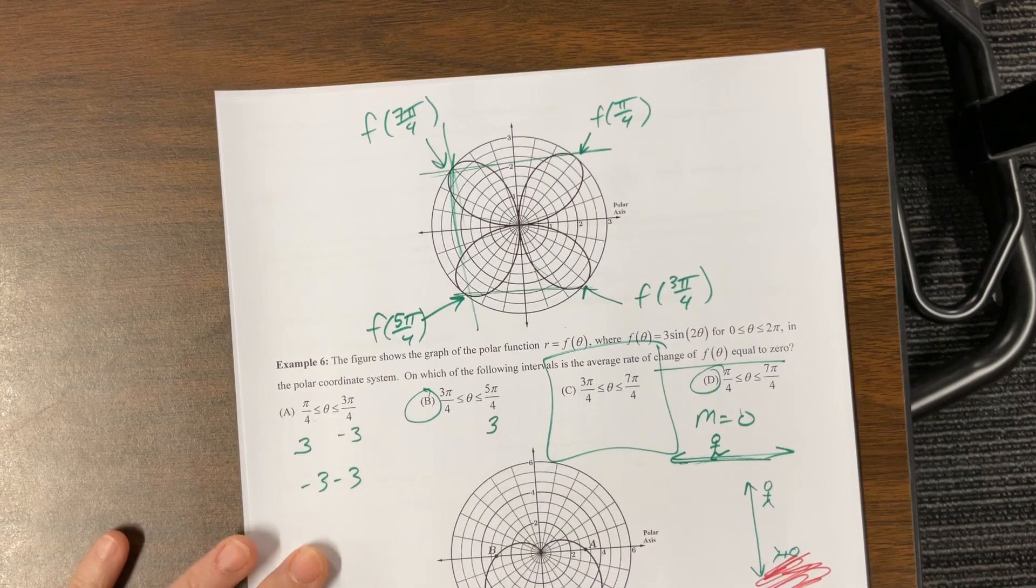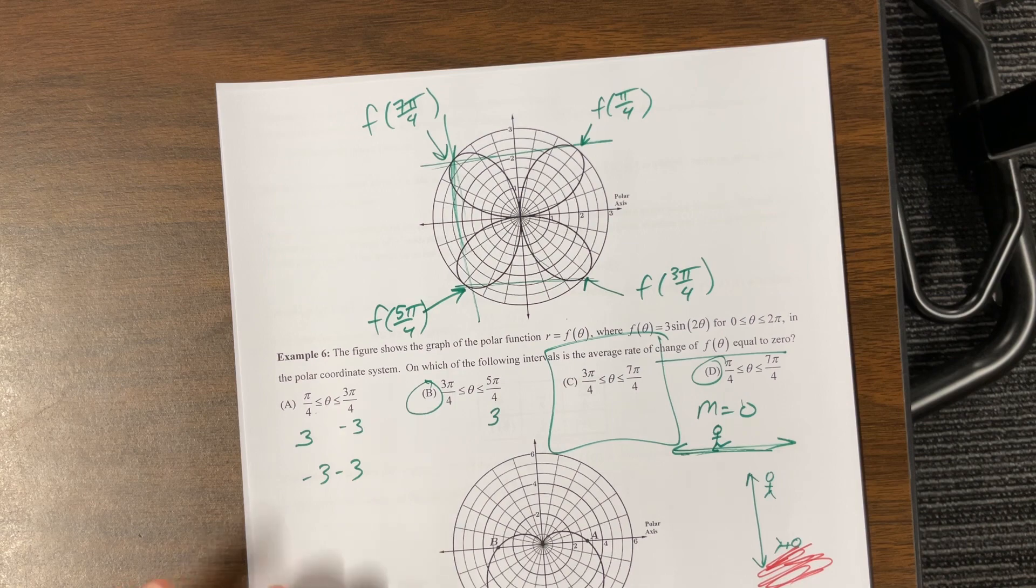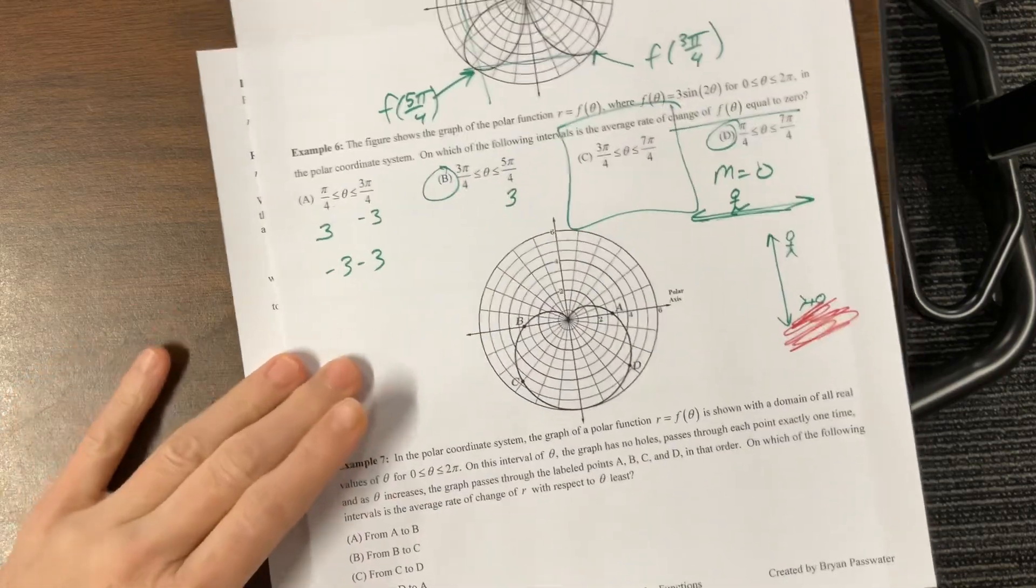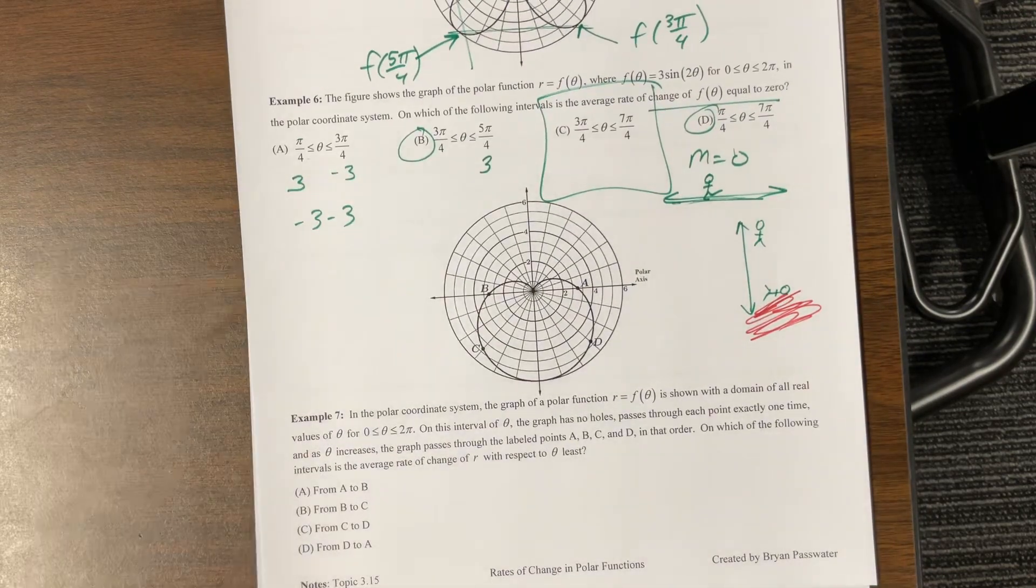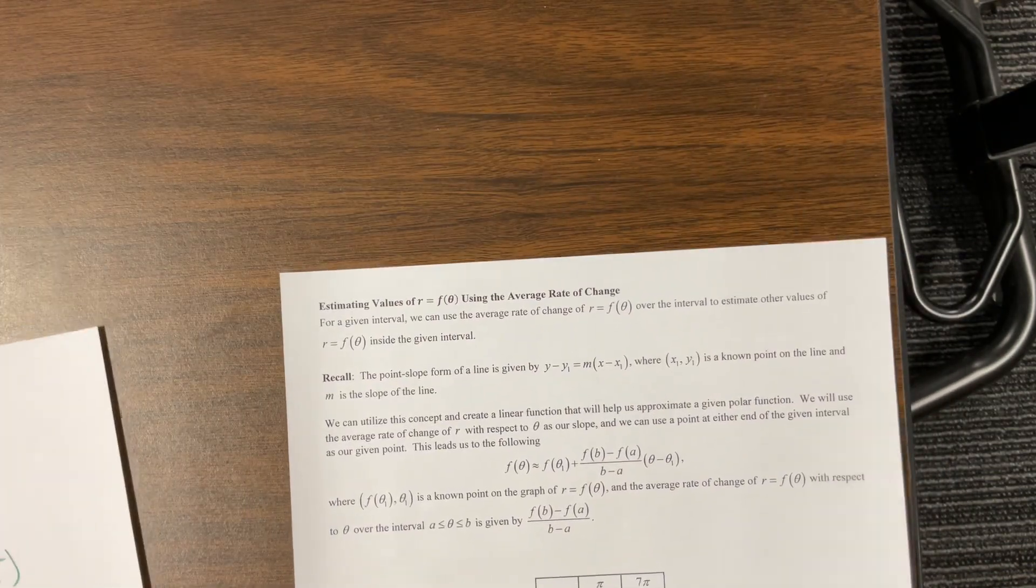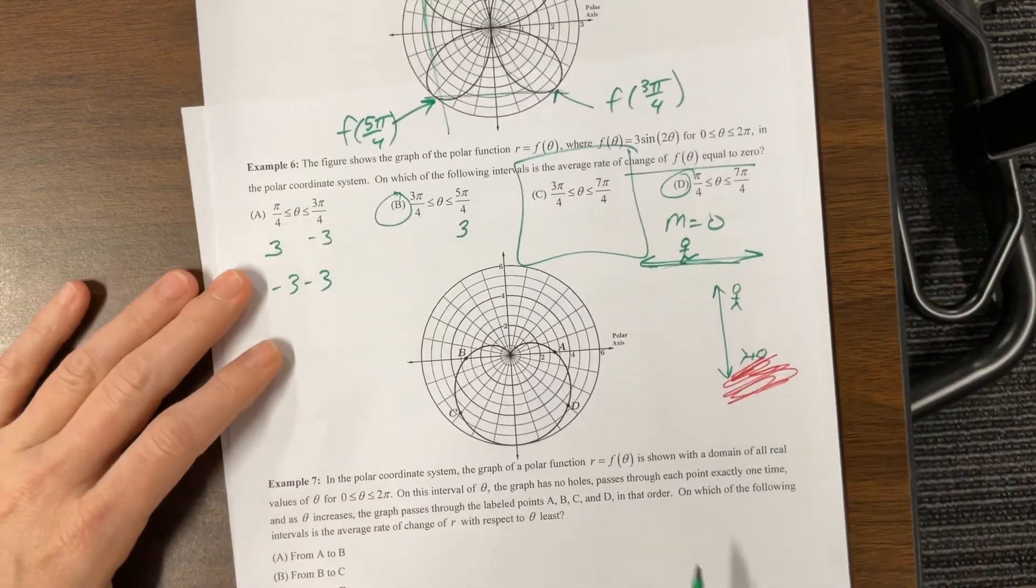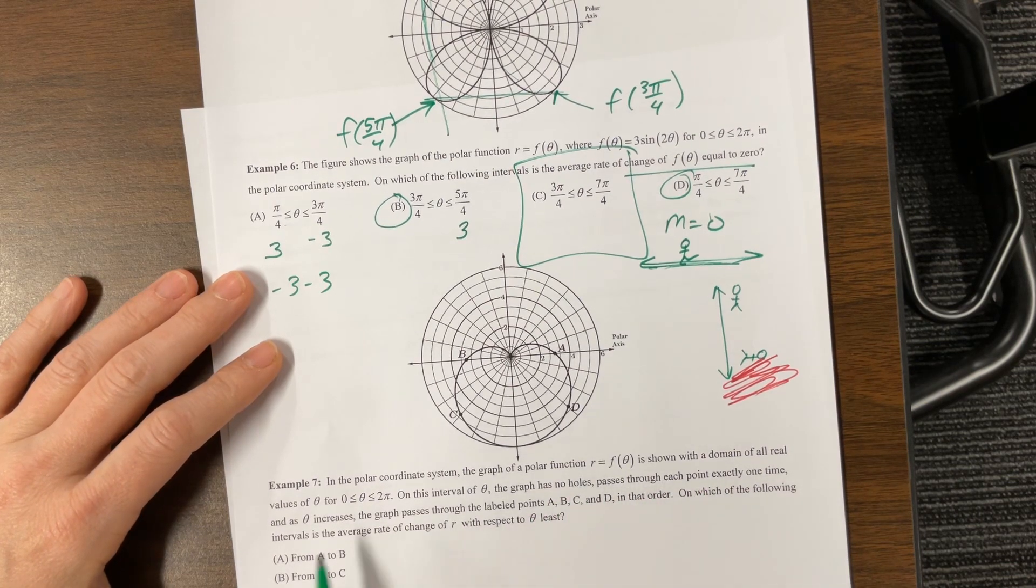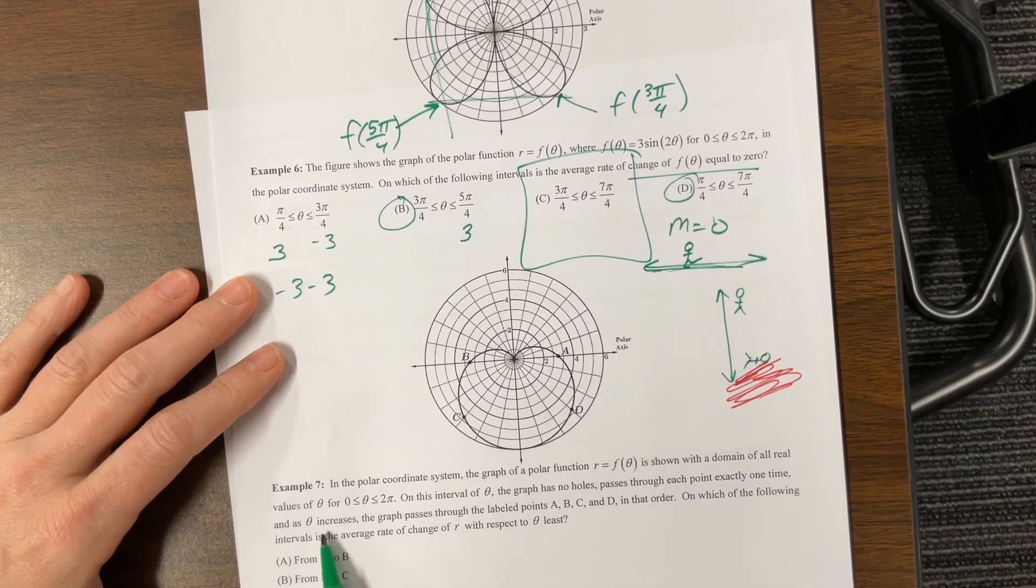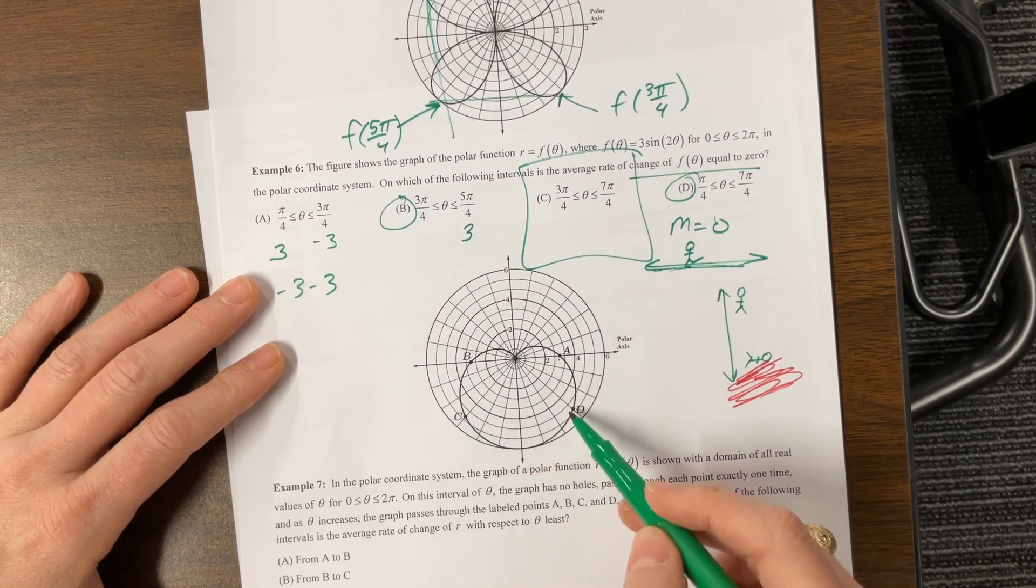Let's see how much more do we have. There's one more in this world. Let's see how I do on this one without having read it first. And then I'll do that last bit of his notes, which changes, yeah, estimating values, I'll make a separate video for this page. Let's look at this one. Shown to domain of all real values on this interval, it has no holes, passes through each point exactly one time, and as theta increases, the graph passes through points labeled A, B, C, D, in that order. So we start at A, we come to B, we go through C, we come to D, and we get back to A.